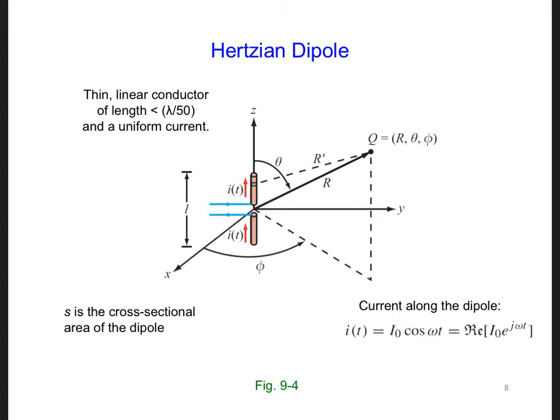For this Hertzian dipole, we're going to assume that the full length of it is less than lambda over 50, and it has a cross-sectional area of S.